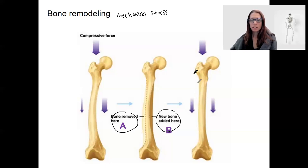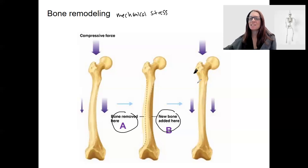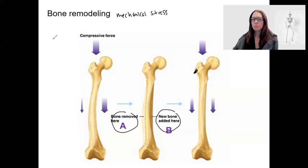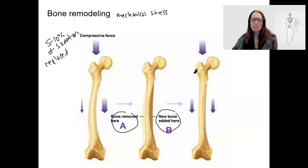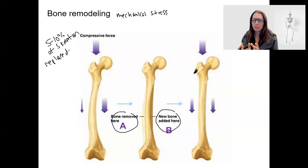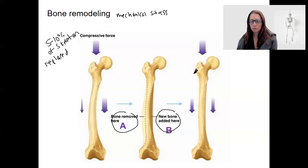Remodeling can happen based on activity levels. Related to this is the fact that your entire skeleton is actually replaced over time — about 5% to 10% of your skeleton is replaced in a year. That provides an opportunity for bone that is active to remodel as it's being replaced, and this replacement occurs somewhat regardless of changes in forces.